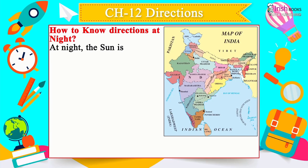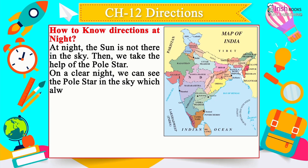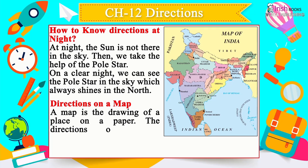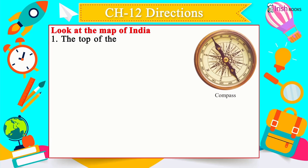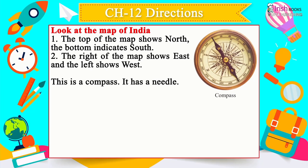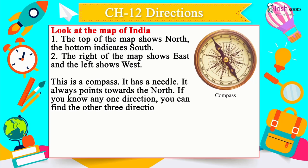How to Know Directions at Night: At night the sun is not in the sky, so we take the help of the pole star. On a clear night, the pole star always shines in the north. Directions on a Map: A map is the drawing of a place on paper — the top shows north, the bottom south, the right shows east and the left shows west. A compass always points towards the north — if you know one direction, you can find the other three easily.